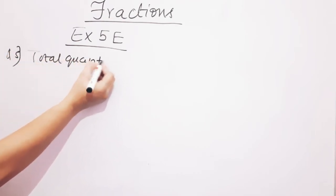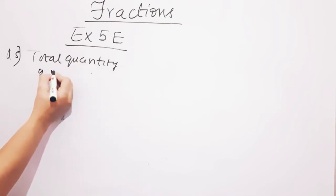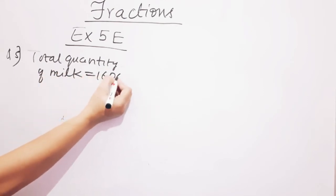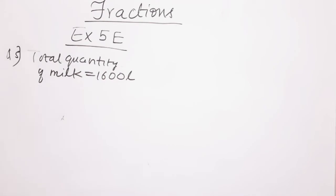The total quantity of milk is 1600 litres. Each glass can hold 1/4 of a litre. Now, 1 litre equals how many millilitres? If you know the answer, please reply to me in the comment section.